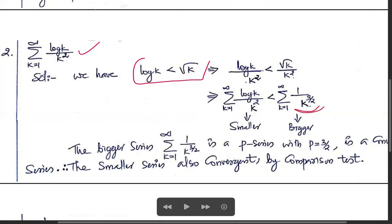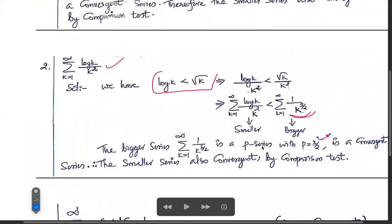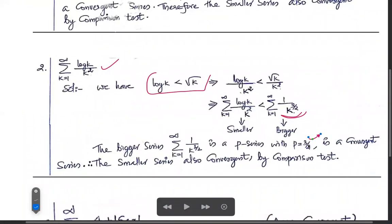So series log(k)/k² < series 1/k^(3/2). This is a p-series with p = 3/2. Since p > 1, the p-series with p = 3/2 is convergent. Therefore, by the comparison test, since the bigger series converges, the series summation log(k)/k² is also a convergent series.